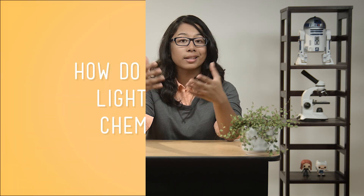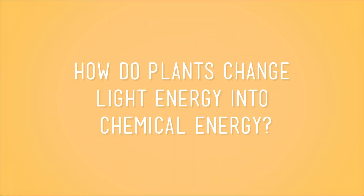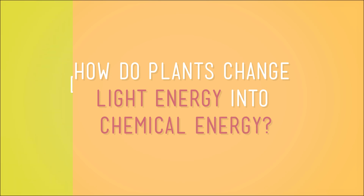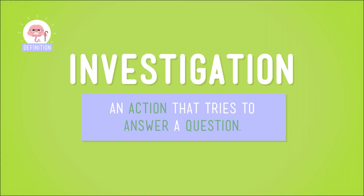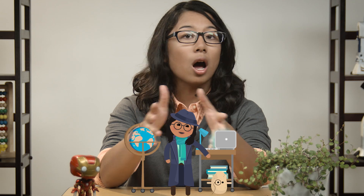You already know how scientists try and answer questions about the world around us. As scientists ourselves, we've done activities to answer questions about plants, like how do plants change light energy into chemical energy, and do plants really need dirt to grow? Each time we asked a question, we followed it with an investigation — a sort of exercise to try and find an answer to that question. Scientists do a lot of investigations about plants, and usually they follow the same general set of steps.